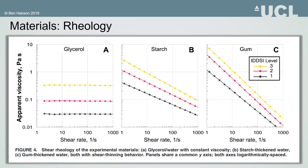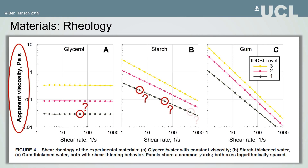The results showed that the thickened liquid's apparent viscosity sometimes changed by a factor of several hundred times depending on the test shear rate. So immediately we can see that a measurement of apparent viscosity can't categorise the relative thickness of different types of liquids. There needs to be a more holistic measure of flow behaviour.